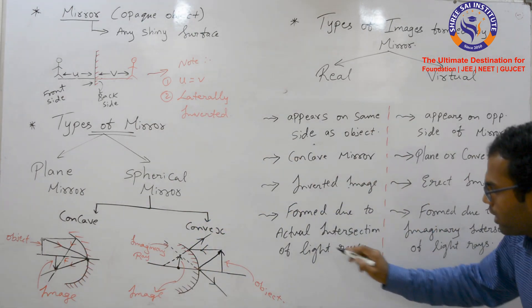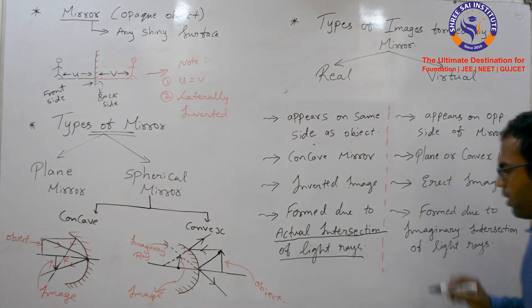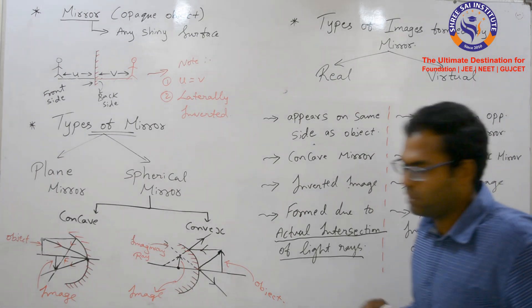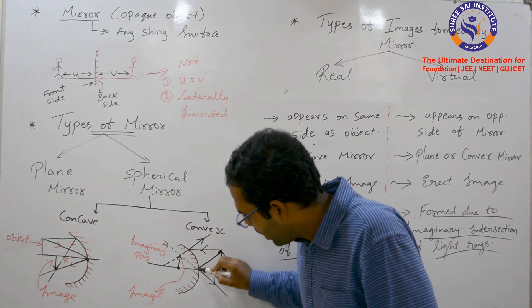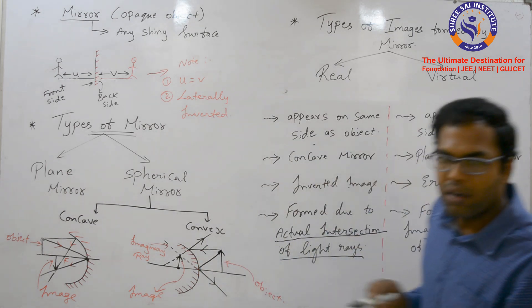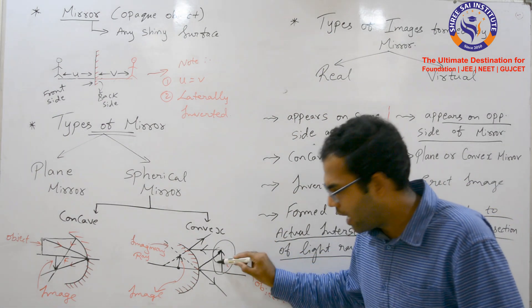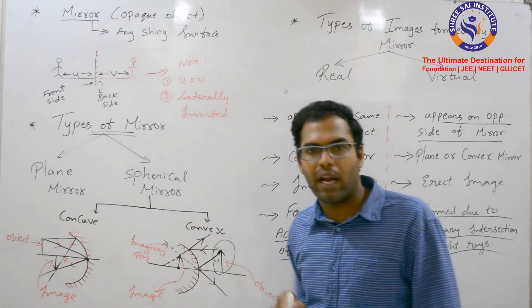The real image is formed due to the actual intersection of light rays. The image is formed where the reflected rays actually meet. As we extend the lines, you can see that the image is formed on the opposite side of the mirror from the object.